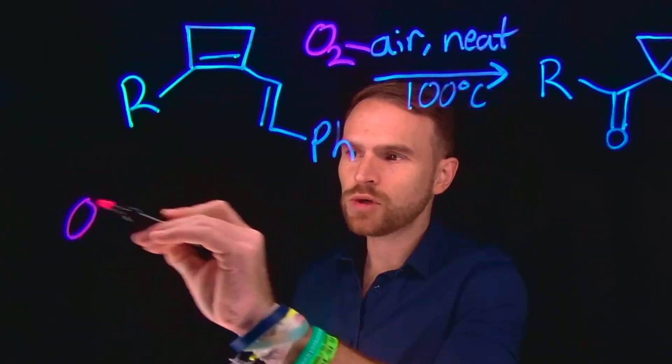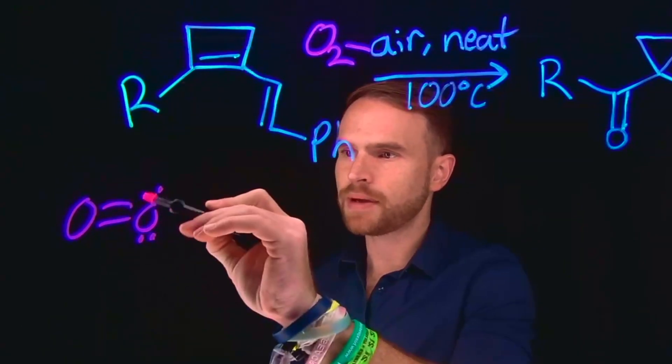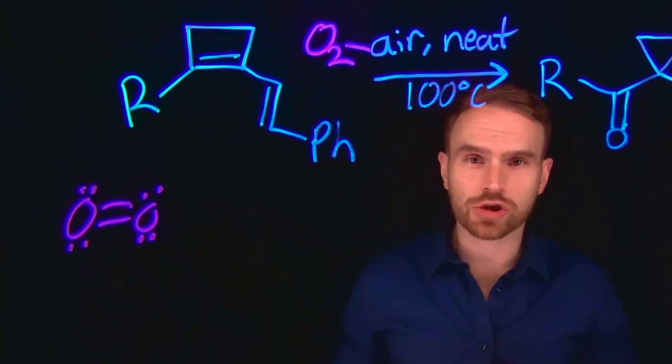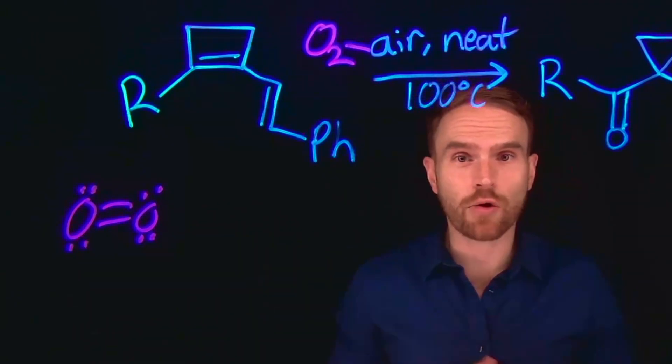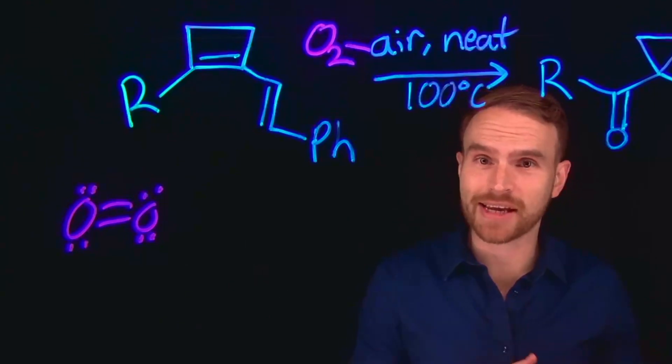So even though we draw the Lewis structure for oxygen, depicting it with two sets of lone pairs on each oxygen, the reality is that this Lewis structure doesn't actually match the molecular orbital diagram. So in truth, oxygen as a molecule can act like many other radicals that you've probably seen react in organic chemistry.